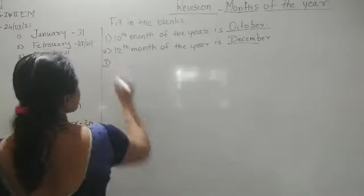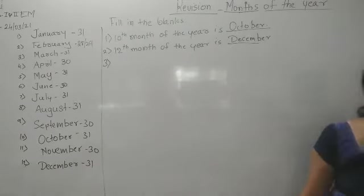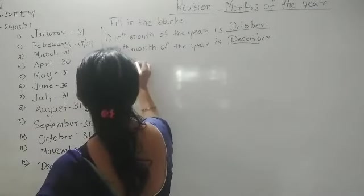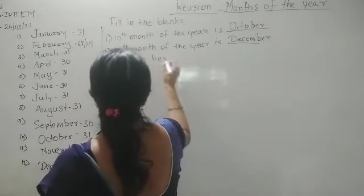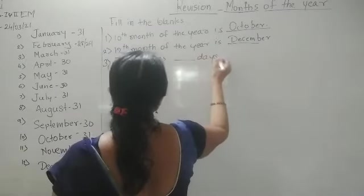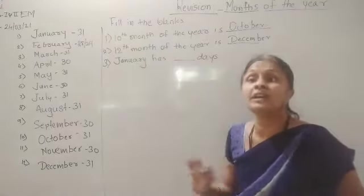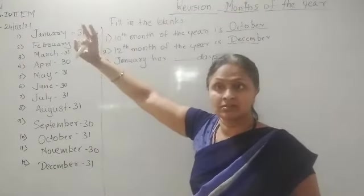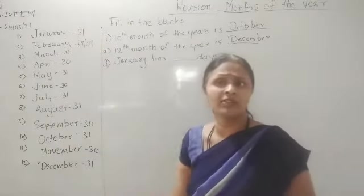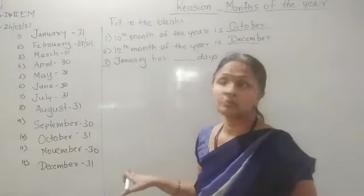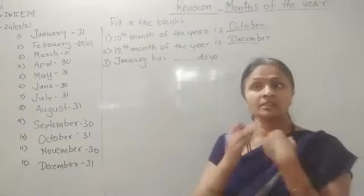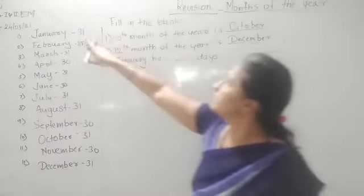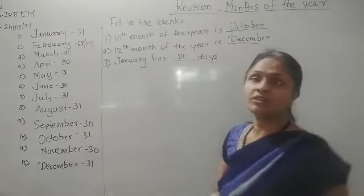Third question: January has ___ days. The month January — J-A-N-U-A-R-Y — has how many days? Already we have written the smart work. We need that information every time. January has 31 days. So I write here 31. Like this, if any information you want, write it at the side, then one by one we can solve it in an easy way.